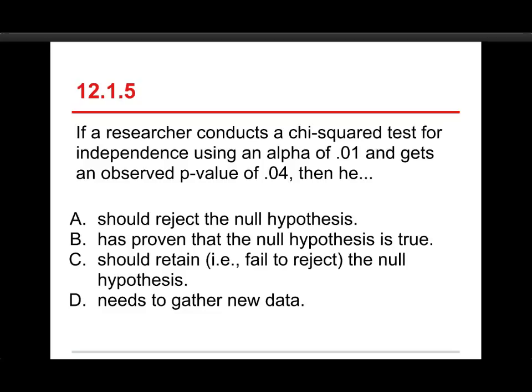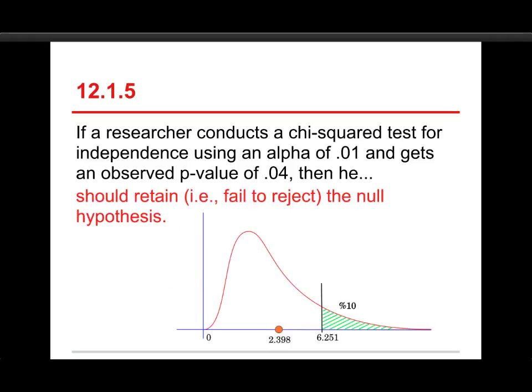Well, the alpha was 0.01. The p-value was 0.04. So our p-value is bigger than our alpha. We should retain or fail to reject the null hypothesis. And again, it's the same chart I showed you just a moment ago. Here we have an observed value, 2.398.